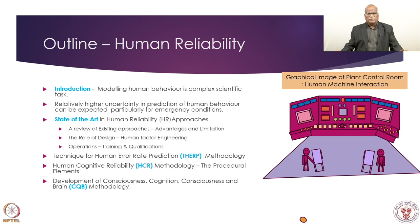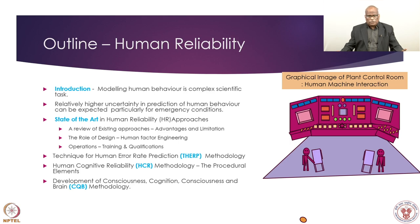First we will talk about the introduction to human reliability. The second lecture is a review of available methods — these methodologies have matured over time. We will discuss a few selected methodologies, see their overview, and examine the advantages and limitations of those selected methodologies. Before we go further, human factors — explicitly or implicitly — form part of design ergonomics and related factors, which are considered industrial engineering factors.